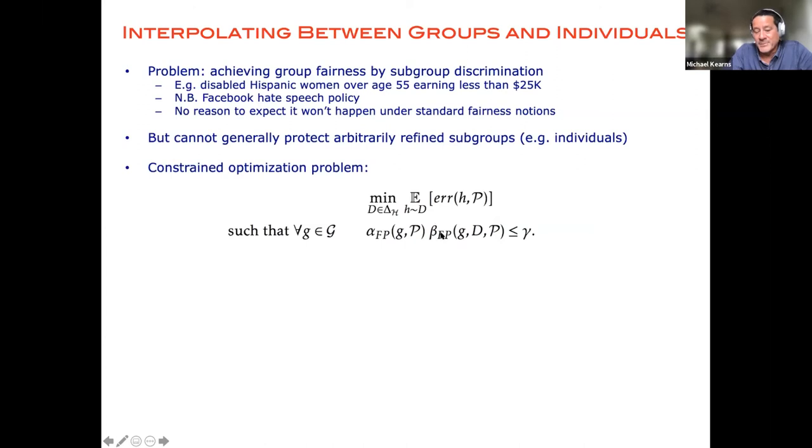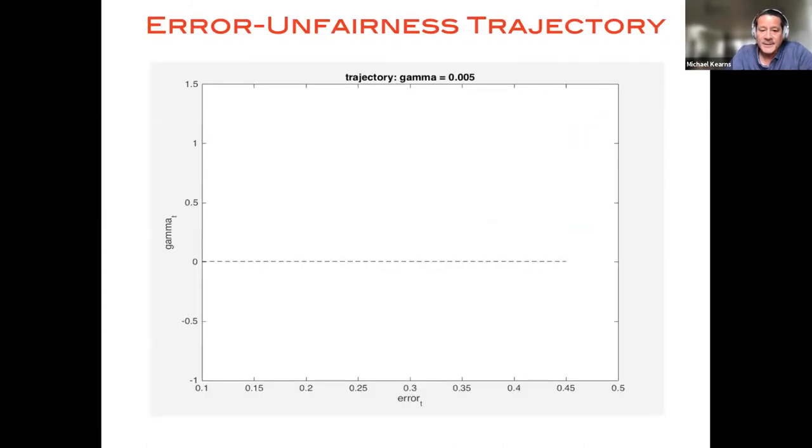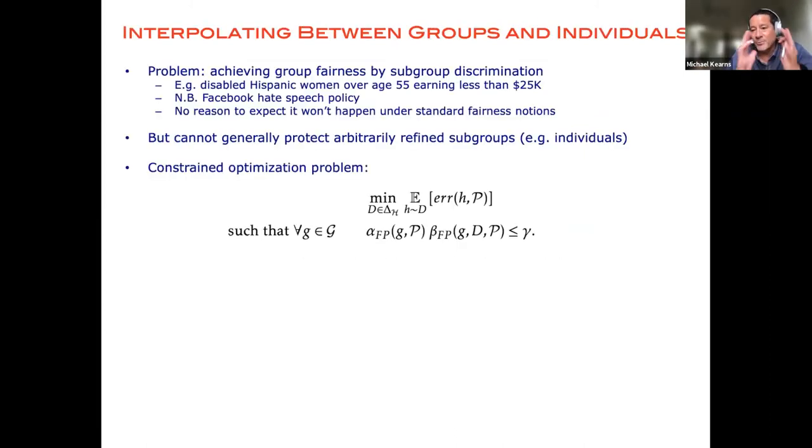And one of the terms of this group fairness constraint does involve the weight of the group, basically the representation of the group in the data set or in the population. And the smaller, you can think of as the smaller the weight of a group in the population is, the weaker the fairness guarantees will be able to promise to them, or alternatively you can think of it as that given the size of our data set we're going to basically say that we can provide fairly strong fairness protections for all groups that constitute let's say at least 1% of the population.